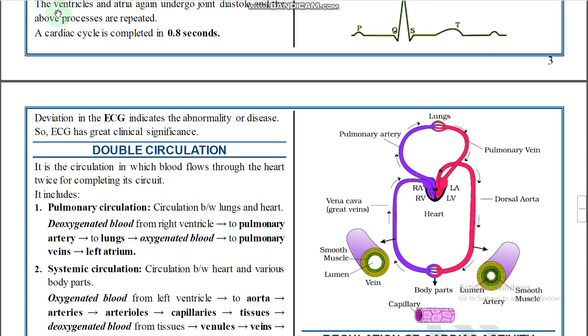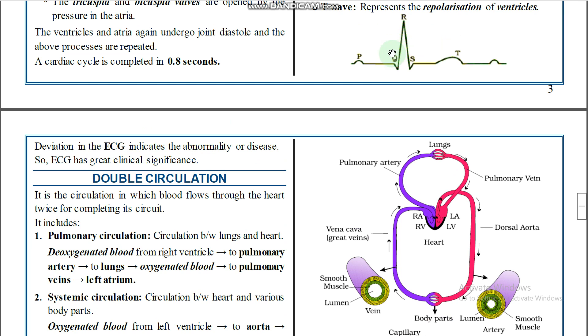The total cardiac cycle is 0.8 seconds — you need to remember this. Any deviation in ECG indicates abnormalities or disease. If any type of deviation is present in the ECG, it indicates an abnormal condition.